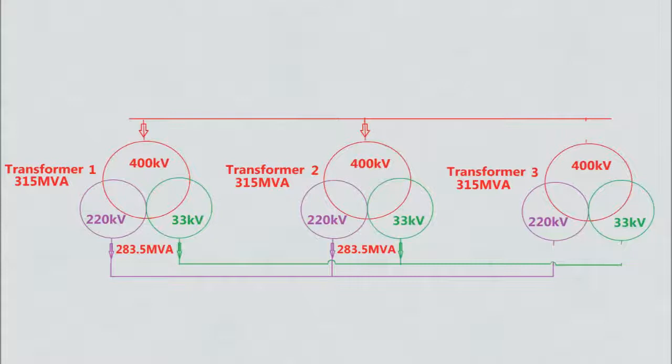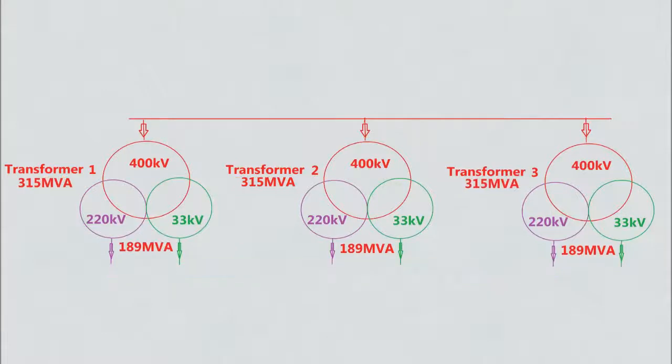Now Transformer 3 can be taken out by opening the isolator and then applying proper earthing at the working points. This is how parallel operation of transformers is done. To bring the transformer back into service, exactly the reverse procedure is followed — that is, after removing earthing and closing isolators, the 400 kV side is charged first, and then the 220 kV and 33 kV sides are charged.